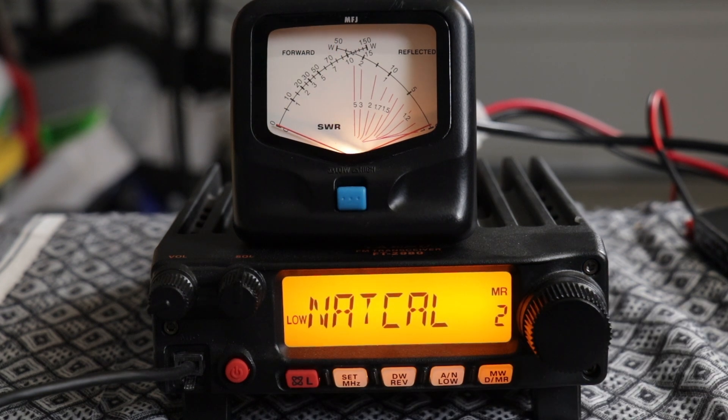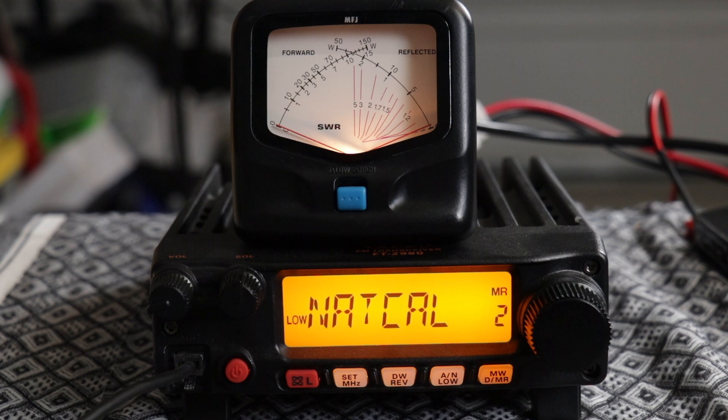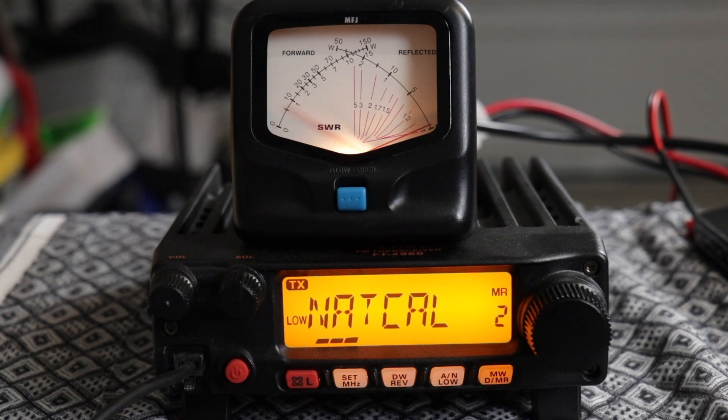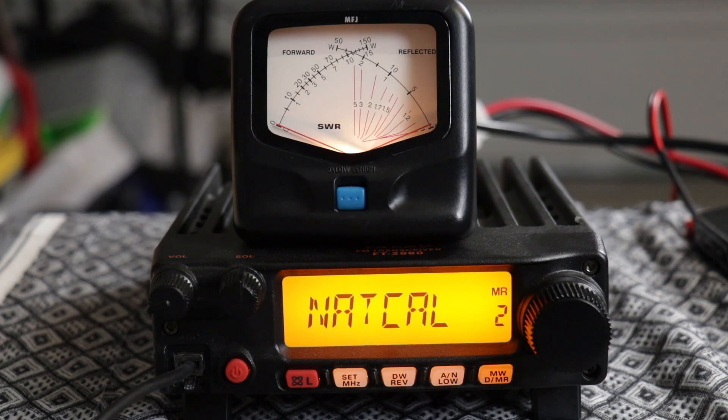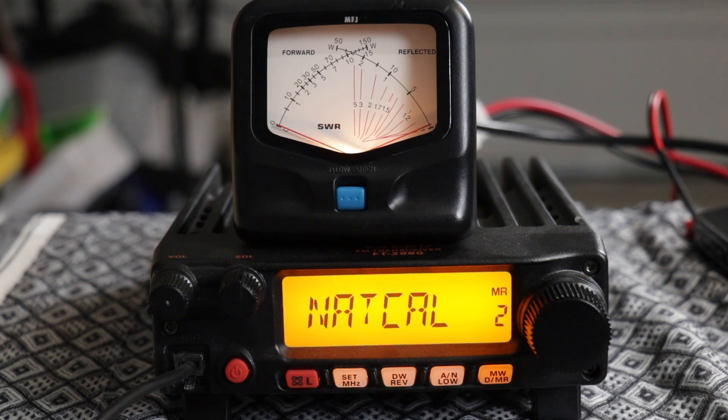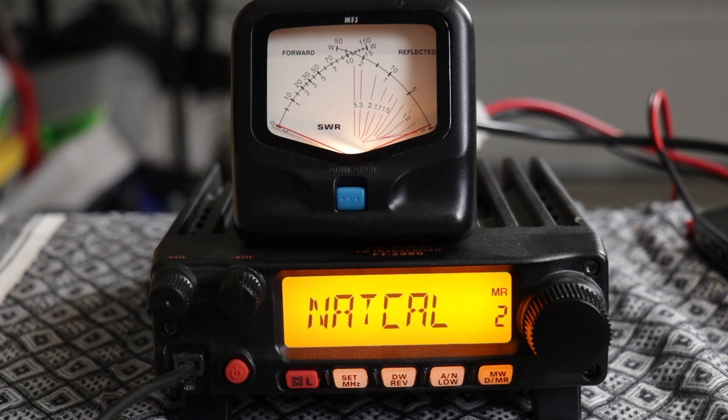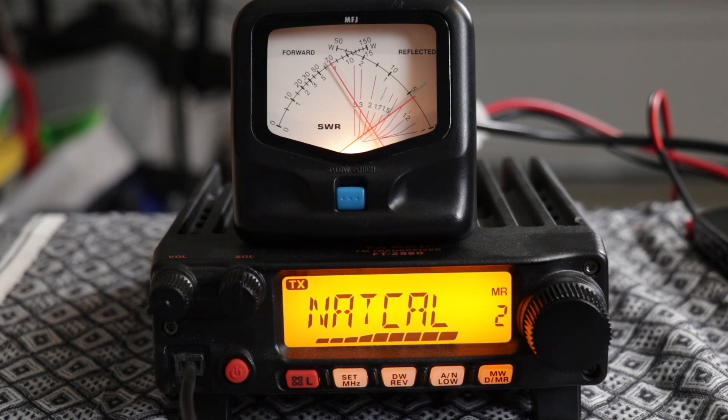We're going to try low power on the FT 2980 which is 5 watts. It looks like we're getting right at about 5 watts and we are going into a dummy load. Now the button's pushed in for high and we're going to see what we get with high on the radio which is 80 watts. It looks like we're right at about 70.